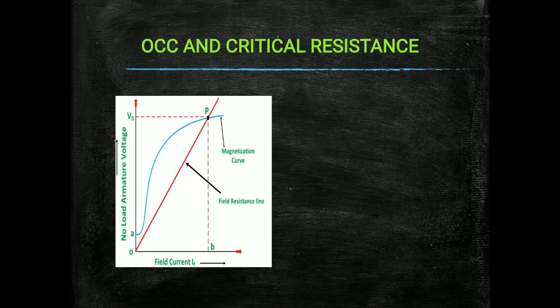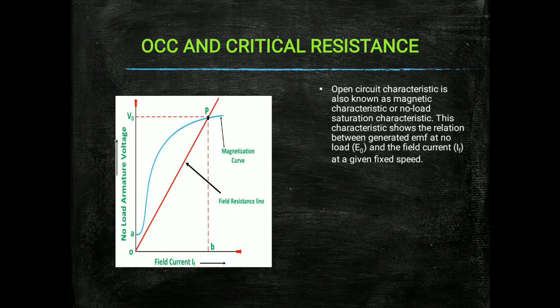A tangent is drawn from a point to the initial point of the graph; this shows the field resistance line. Now we have to discuss the OCC characteristics and critical resistance from this graph. Open circuit characteristics is also known as magnetizing characteristics, magnetic characteristics, or no-load saturation characteristics.